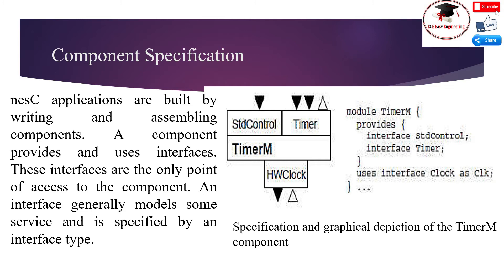The separation of interface type definitions from their use in components promotes the definition of standard interfaces, making components more reusable and flexible. A component can provide and use the same interface type or provide the same interface multiple times. In these cases, the components must give each interface instance a separate name, using the same notation as shown for clock. Components are also a clean way to abstract the boundary between hardware and software. For instance, on one sensor board, the temperature sensor is mostly in hardware — Temperature is a thin layer of software accessing an on-chip hardware register.